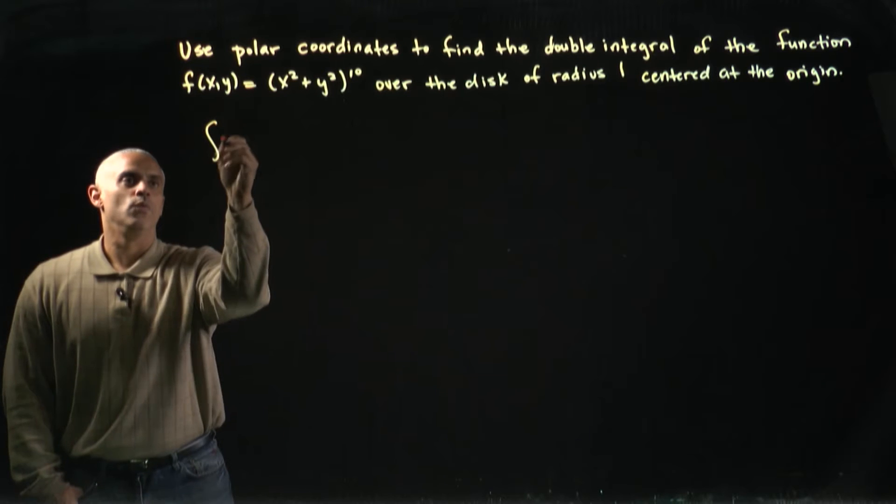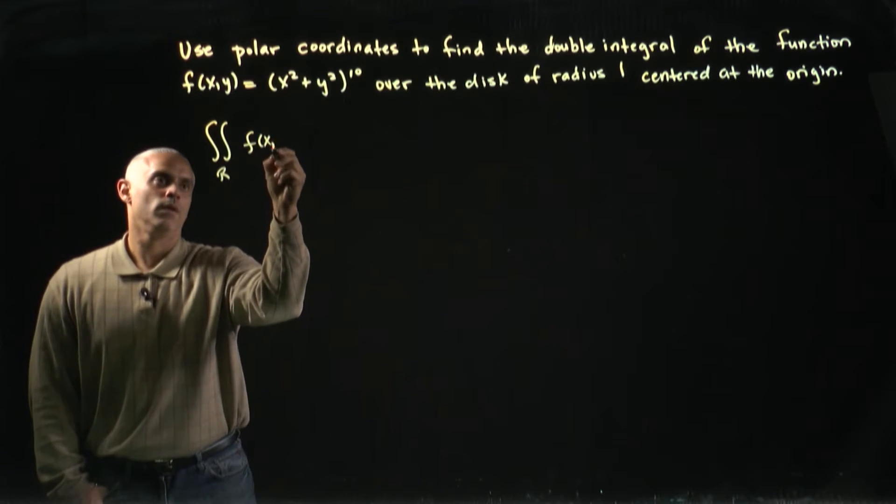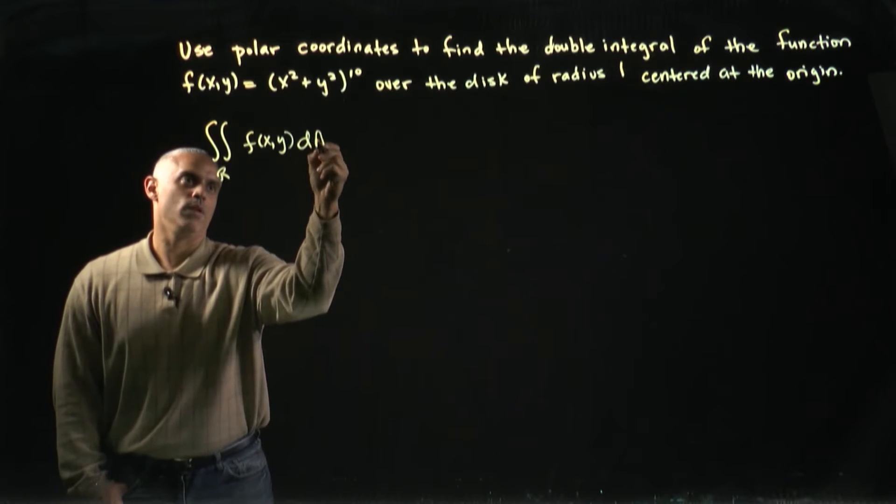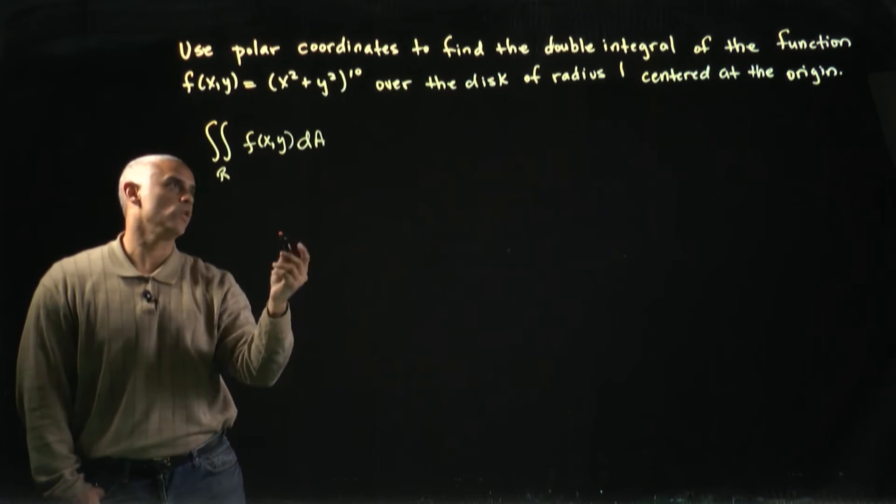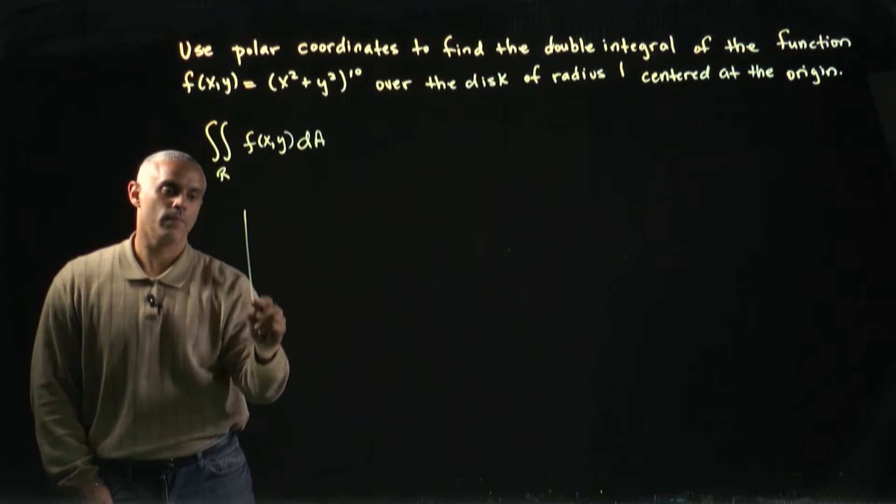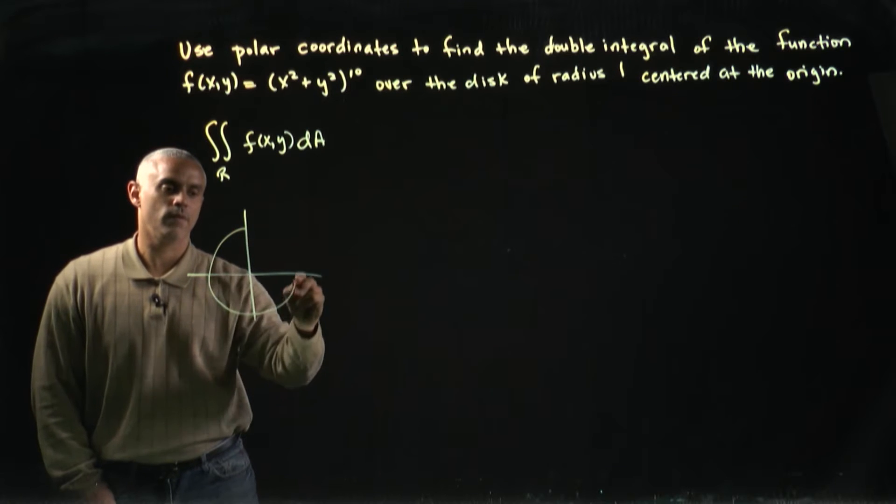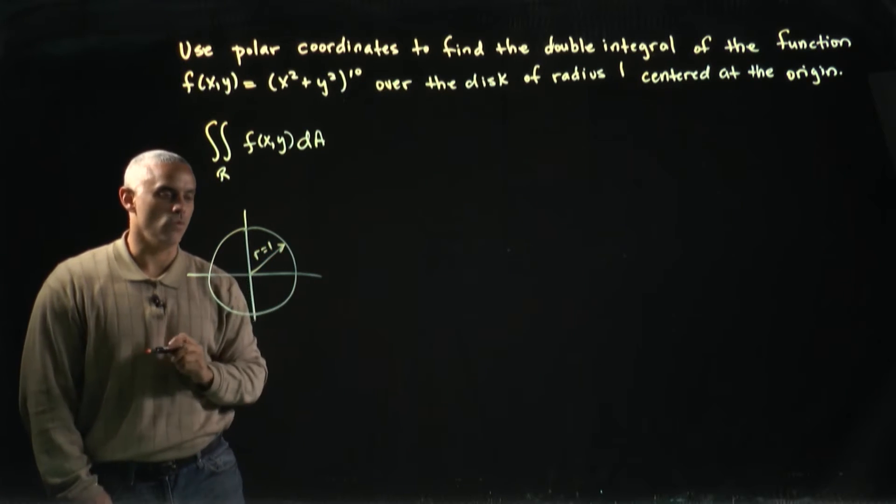We wish to find the double integral of some function with some differential area element. We're given our function, and we're told that the region over which we plan to integrate is a disk centered at the origin with radius equal to one.